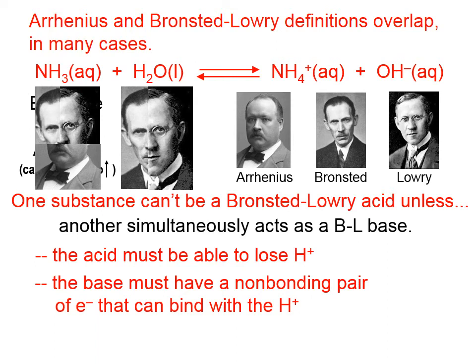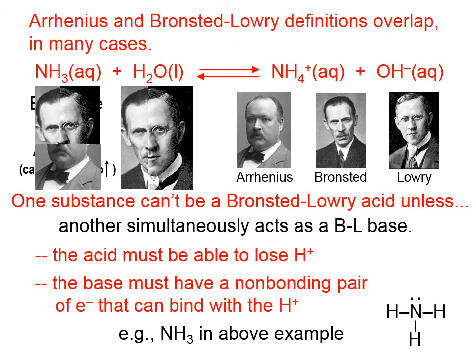The acid has to be able to lose a proton, and typically the base has a non-bonding pair of electrons that can bind with the proton. For example, ammonia, NH3, has a Lewis structure with an unshared pair of electrons that binds to the proton, and of course we form the ammonium ion.